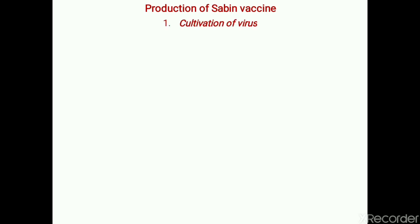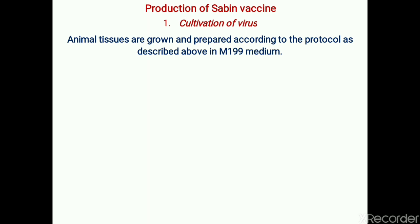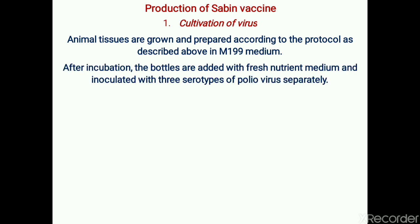The production of Sabin vaccine begins with cultivation of viruses. Sabin vaccine is produced as a live attenuated vaccine. Animal tissues are grown and prepared using sterile M199 medium, as described under the production of Salk vaccine. The bottles are then added with fresh nutrient medium and inoculated with three serotypes of polio viruses separately.